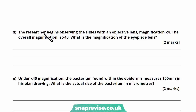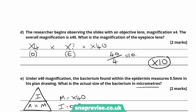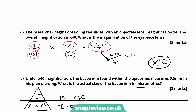Part D says the researcher begins observing the slides with an objective lens with magnification times 4, and the overall magnification is times 40. What is the magnification of the eyepiece lens? This is a quick calculation — the objective lens is times 4, the overall magnification is times 40, and the product of the objective and eyepiece lens magnifications must equal 40. So 40 divided by 4 gives us 10. The eyepiece magnification is times 10.